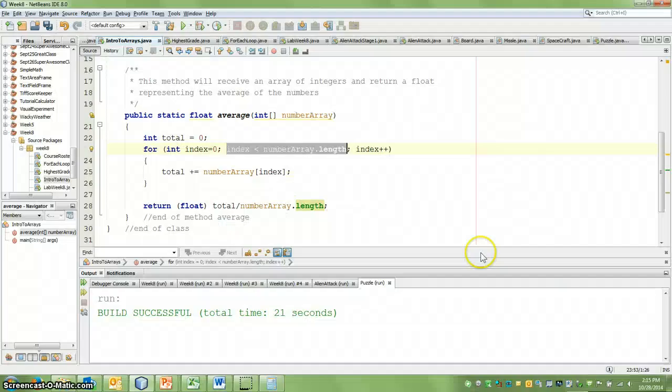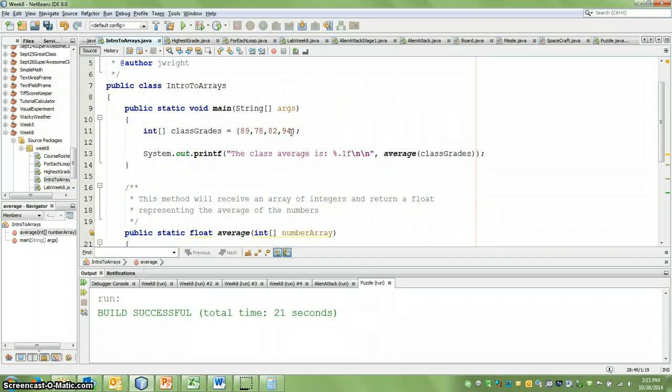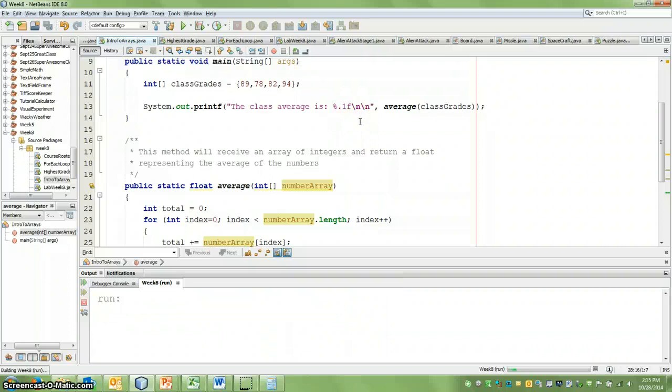And then at the end, what it does is it says return whatever that total was divided by the number of elements in your array. So in this case, it doesn't even care if we have four elements, ten elements, or a hundred elements. It'll add them all up, and then it'll just divide it by the number of elements. What I'm doing here is I'm casting it as a float type so that I can get some decimals back. So let's run this. If I run it, it says the class average is 85.8.